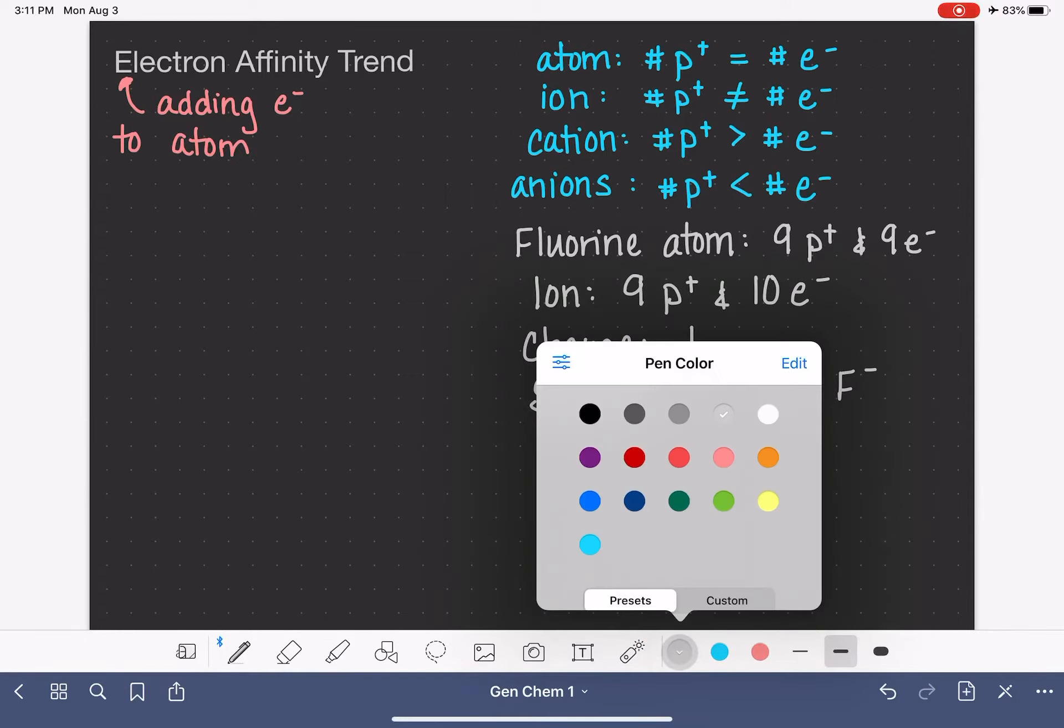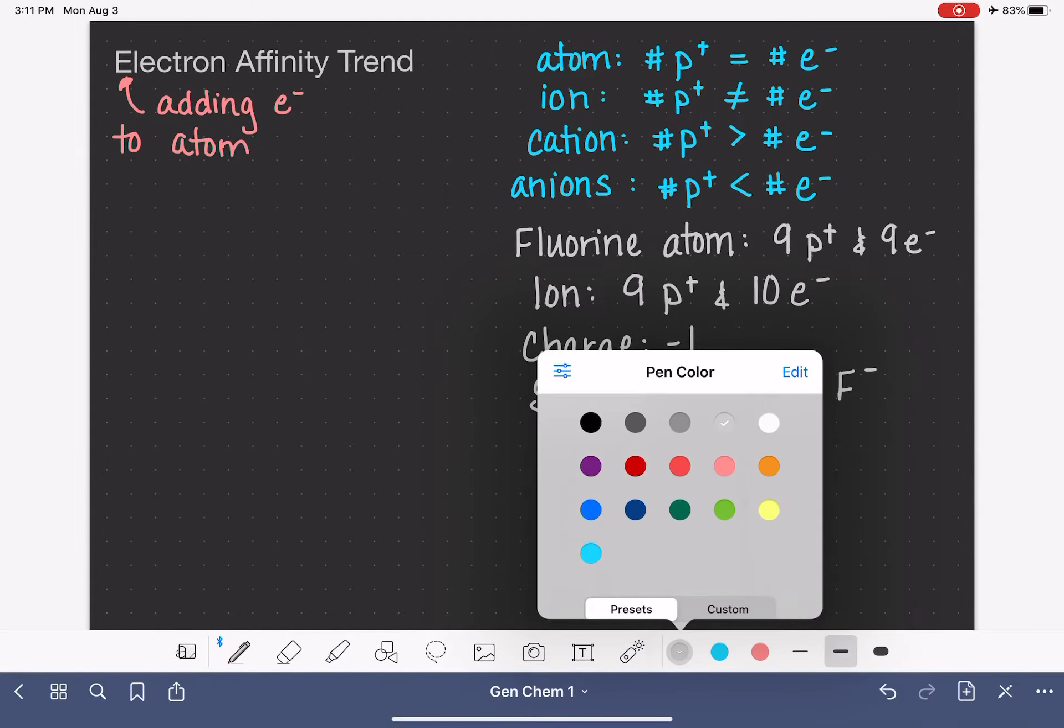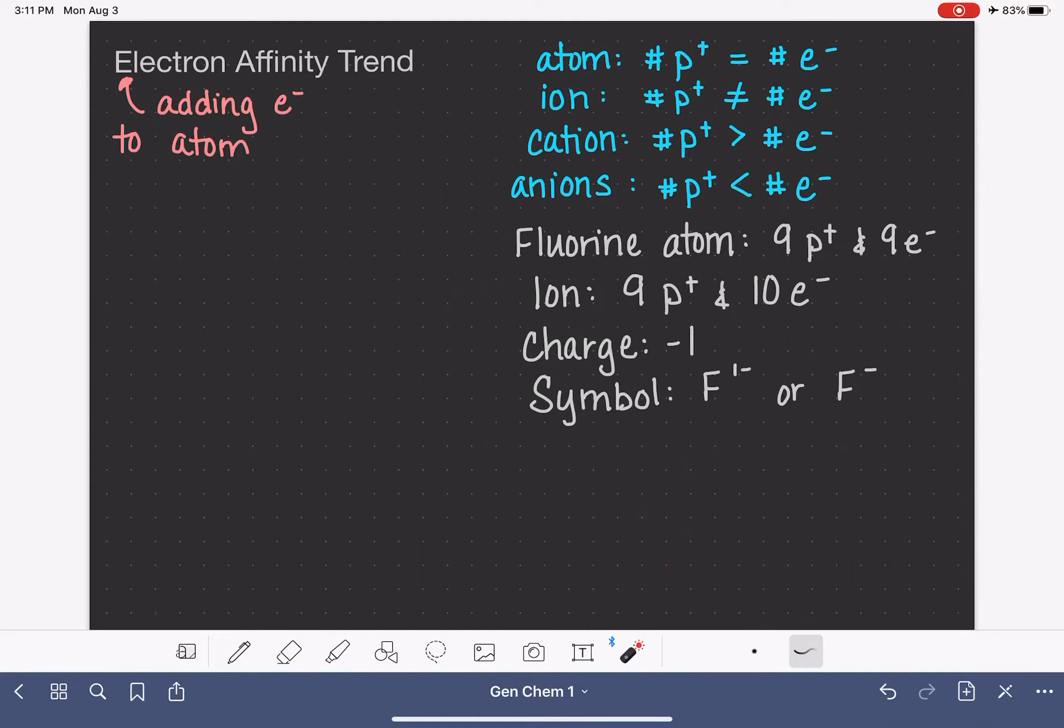Also, this ion cannot be referred to as fluorine because fluorine is the name that we give to the atom. So the name of this particle has to change as well. So now for anions, for negatively charged ions, we actually change the ending of the atom's name. So instead of calling it fluorine, we call this fluoride, and then we do sometimes say ion at the end.